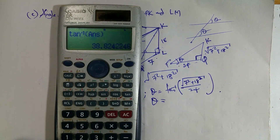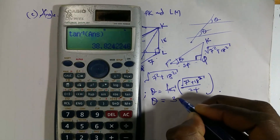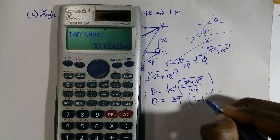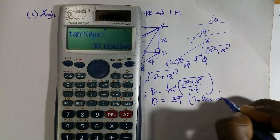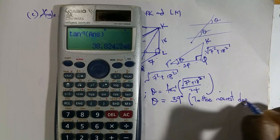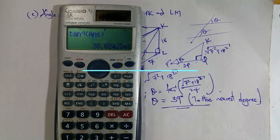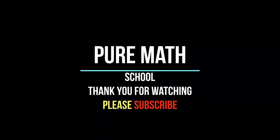Calculating: 7 squared plus 18 squared equals 49 plus 324, which is 373. The square root of 373 is approximately 19.31. Dividing by 24 gives approximately 0.805. Taking arctan gives 38.8 degrees, which rounds to 39 degrees to the nearest degree. That completes all three parts of the question.